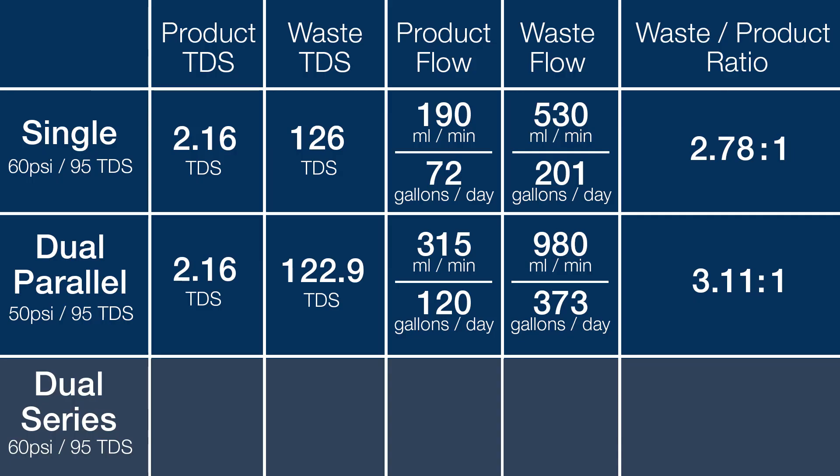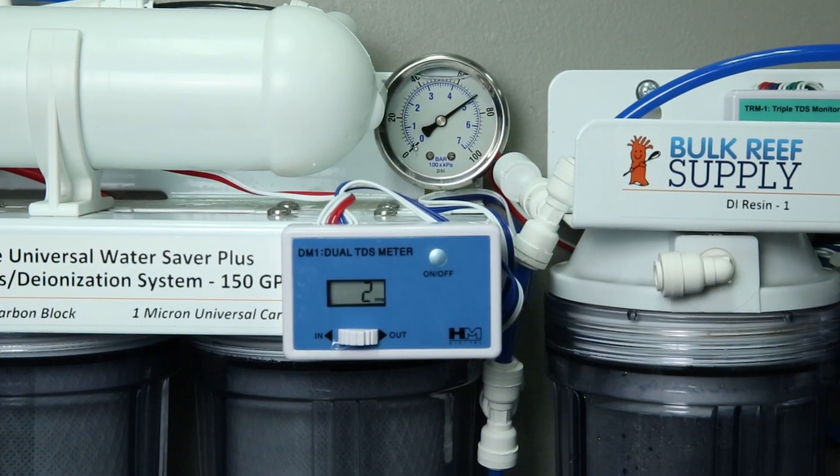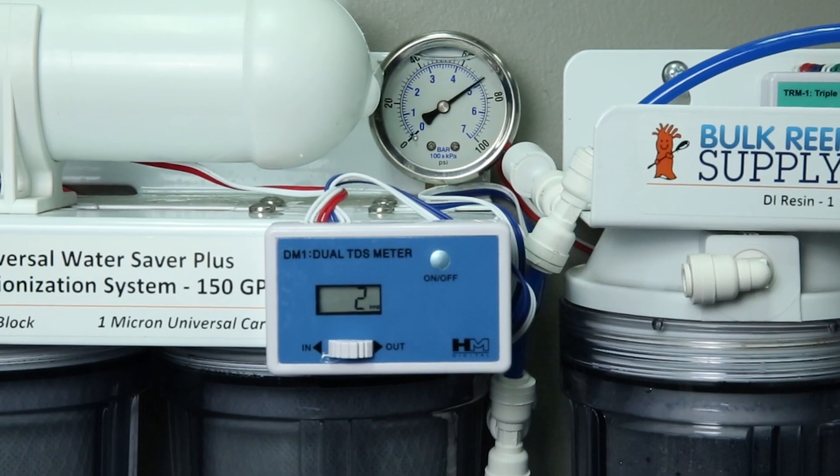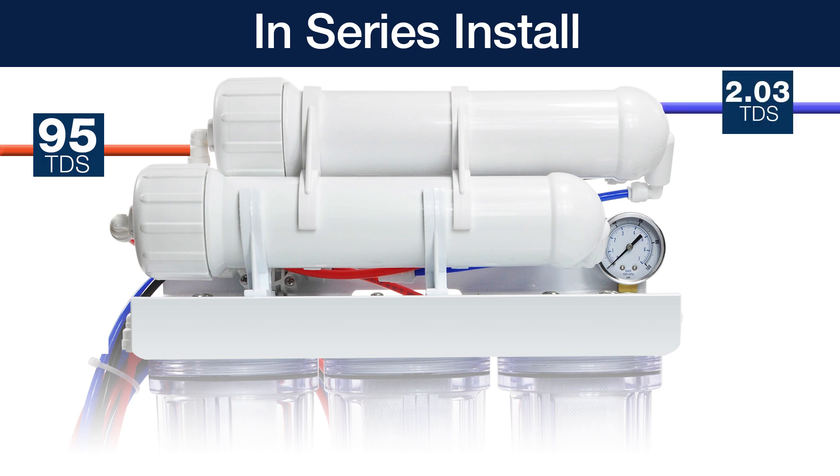Running the dual membranes in series brings the pressure back up to 60 PSI because there is only one waste line and less flow. At 60 PSI, we saw the 95 TDS tap water drop to 2.43 once the product water feeds from each membrane were combined into a single feed. I think everyone expected the TDS to be somewhat higher because one of the membranes is being fed with the waste water, but it is just 0.27 TDS higher, which is below what a common TDS meter on a RODI system is even capable of reading because they only read in whole numbers. To get a better idea of how this works, I think we can all follow the water along its path. The water entering the first membrane is 95 TDS and coming out of the product water line 2.03 TDS. The TDS of the waste water or concentrate is now 126.6.